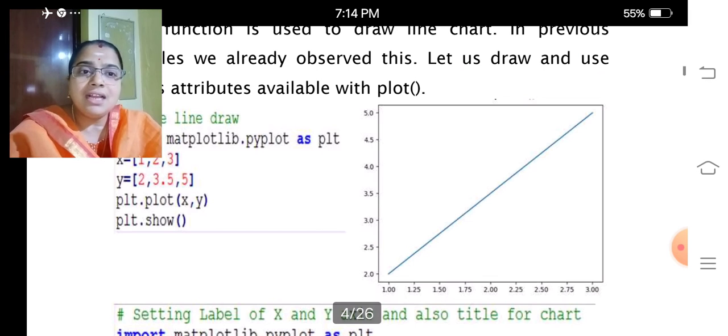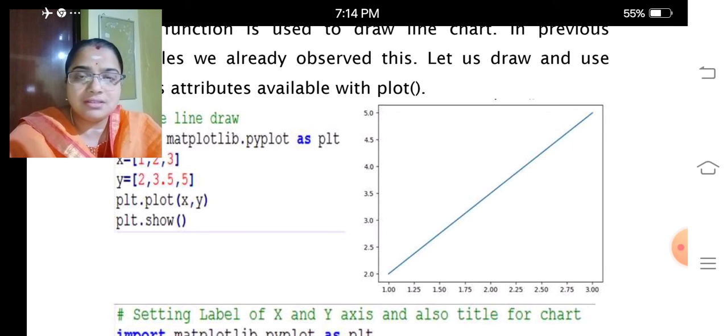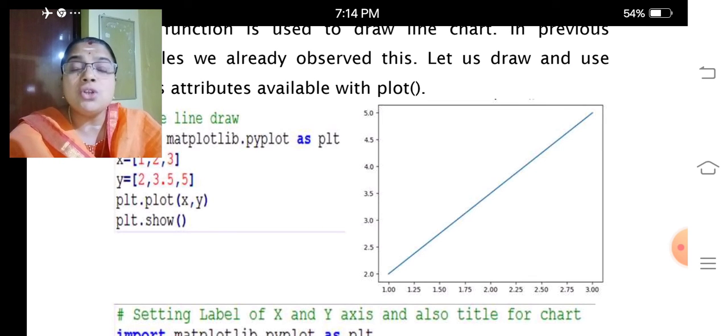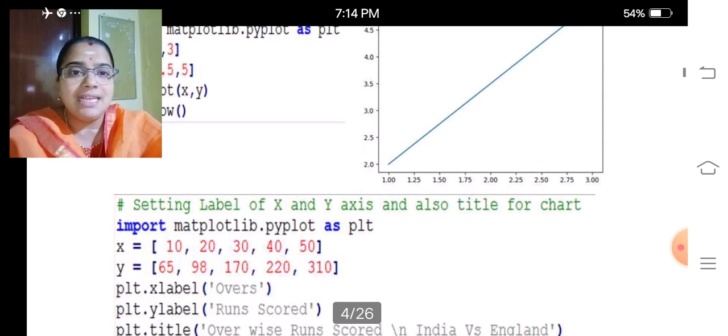So the line will be like this. Look at the coordinates I used here: 1 to 3, so 1, 1.25, 1.5, 1.75, 2, 2.25, 2.5, 2.75, 3, like that. For y values: 2, 2.5, 3, 3.5, 4, 4.5, and 5. We can also set the labels like this.